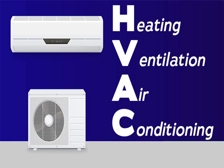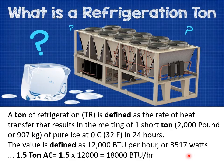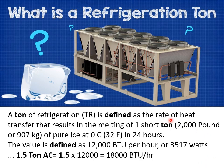HVAC stands for Heating, Ventilation, and Air Conditioning. The capacity of an air conditioner or HVAC chilling plant is measured in tonnes of refrigeration (TR). A tonne of refrigeration is defined as the rate of heat transfer that results in the melting of one short tonne (2000 pounds or 907 kg) of pure ice at 0°C in 24 hours. The value is defined as 12,000 BTU per hour or 3517 watts. For example, an air conditioner of 1.5 tonnes has a capacity of 18,000 BTU per hour.